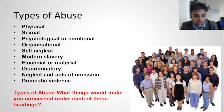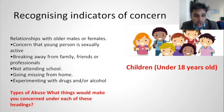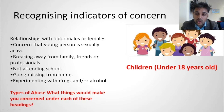Recognizing indicators of concern for children under 18: relationships with older males or females, concern that a young person is sexually active, breaking away from family, friends or professionals, not attending school, going missing from home, or experimenting with drugs and alcohol. If you know a child is meant to be in school but they're in your taxi, report it. If a child brings alcohol into your car or you smell drugs, report it.